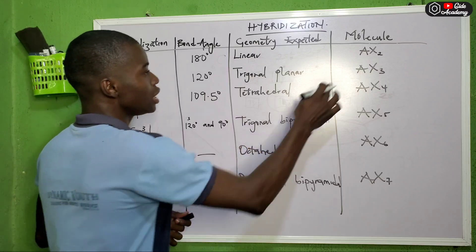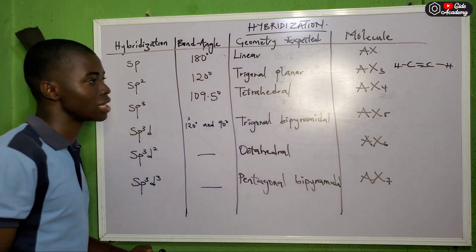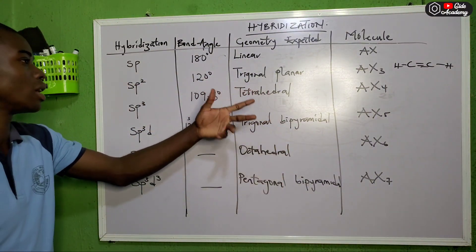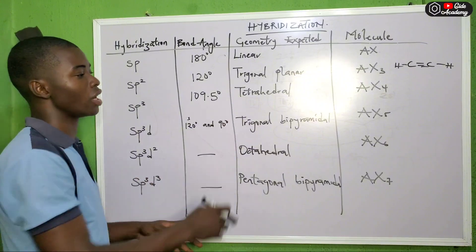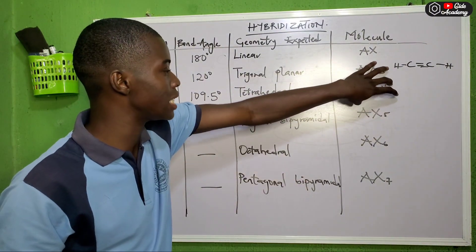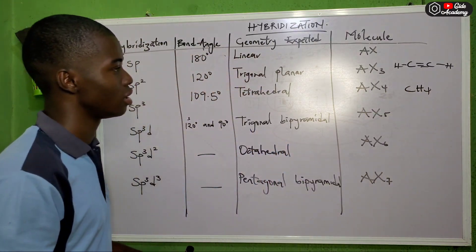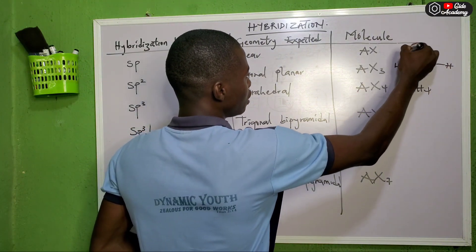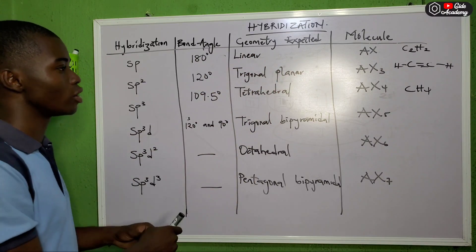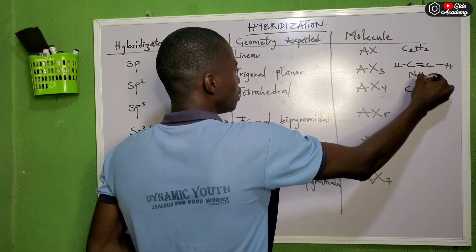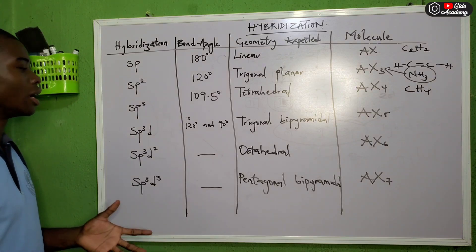In terms of geometry: sp gives a linear molecule (like acetylene, C2H2 with a triple bond). sp2 gives a trigonal planar shape with 120° bond angles — for example, ammonia-like structures. sp3 gives a tetrahedral shape with 109.5° — for example, methane (CH4). NH3 is sp3 hybridized.